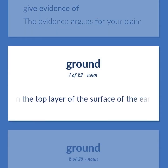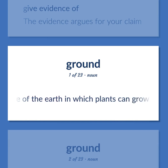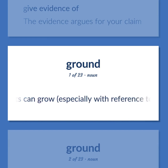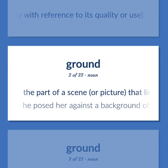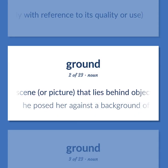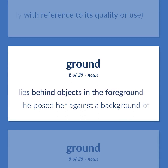Material in the top layer of the surface of the earth in which plants can grow, especially with reference to its quality or use. The part of a scene or picture that lies behind objects in the foreground. He posed her against a background of rolling hills.